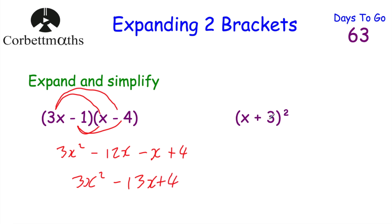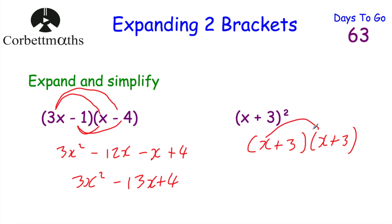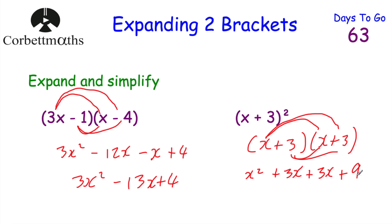Next: (x + 3) squared. Because it's squared we multiply by itself: (x + 3)(x + 3). So x times x is x squared, x times 3 is plus 3x, 3 times x is plus 3x, and 3 times 3 is plus 9. Adding the two middle terms — 3x plus 3x is 6x — giving x squared plus 6x plus 9.